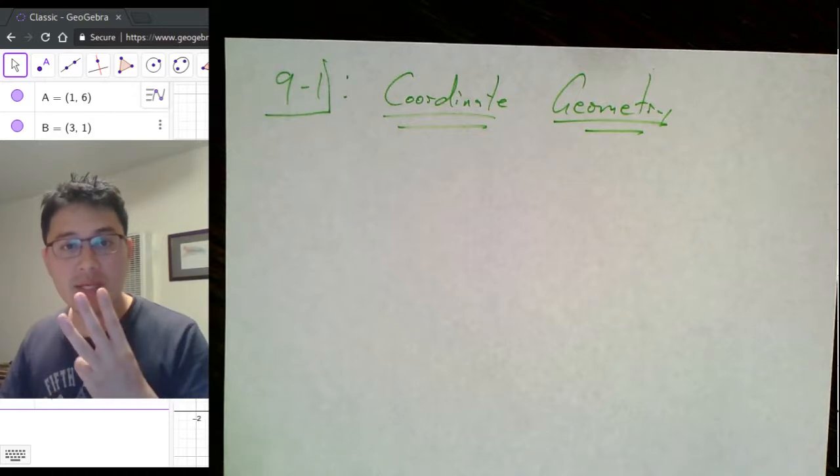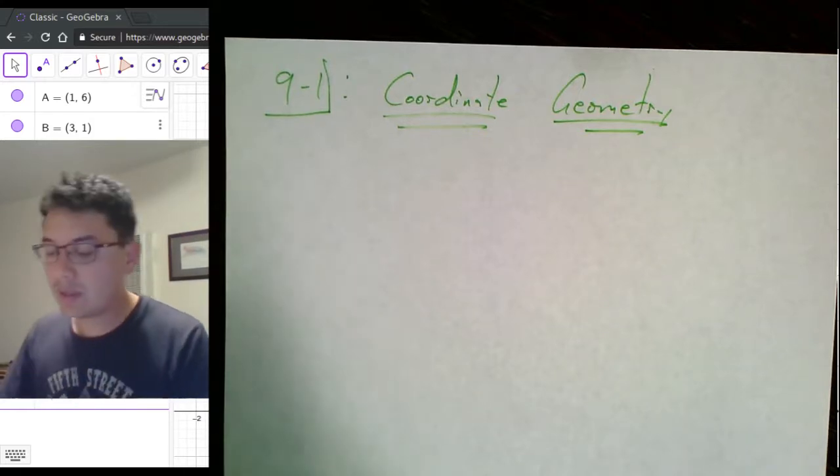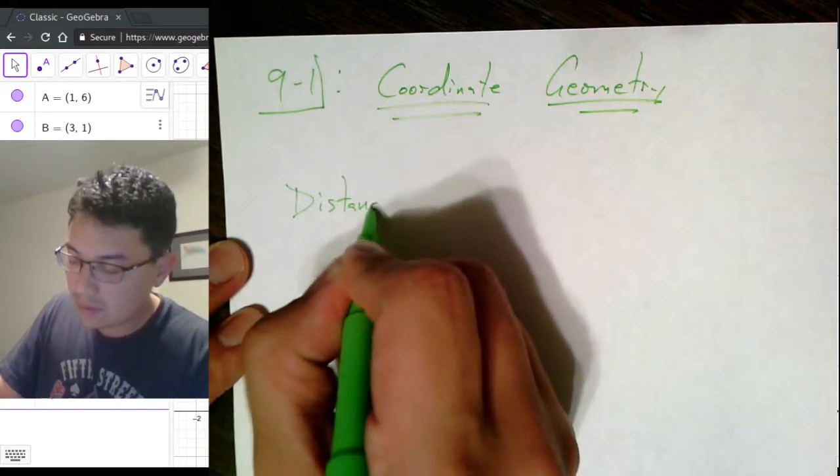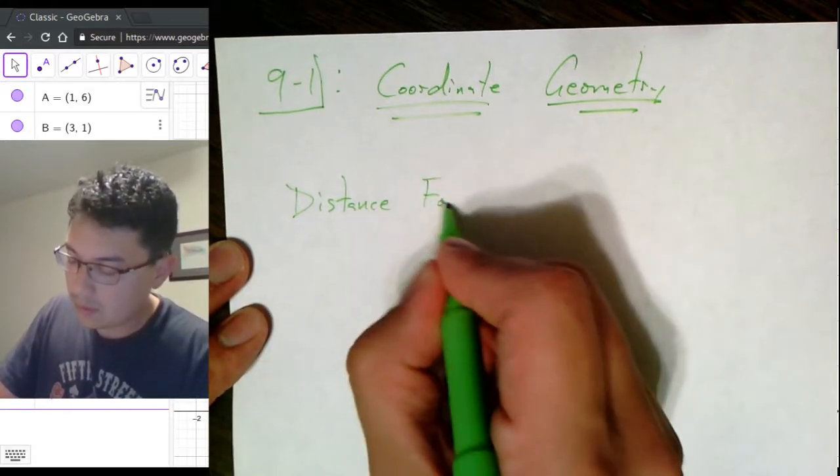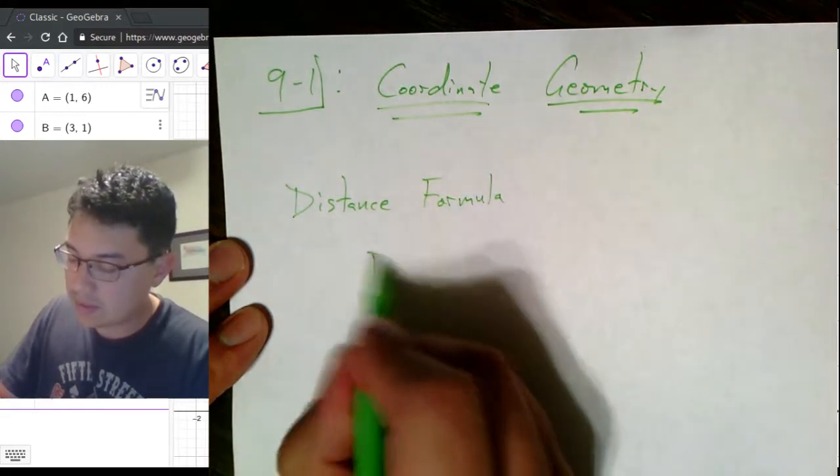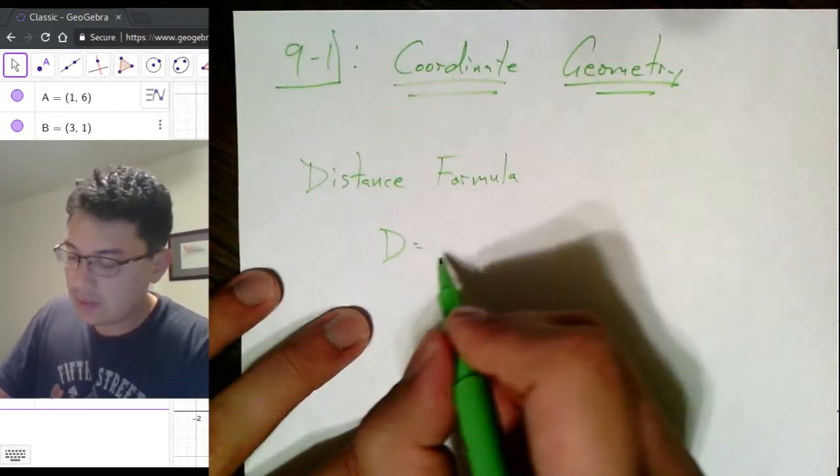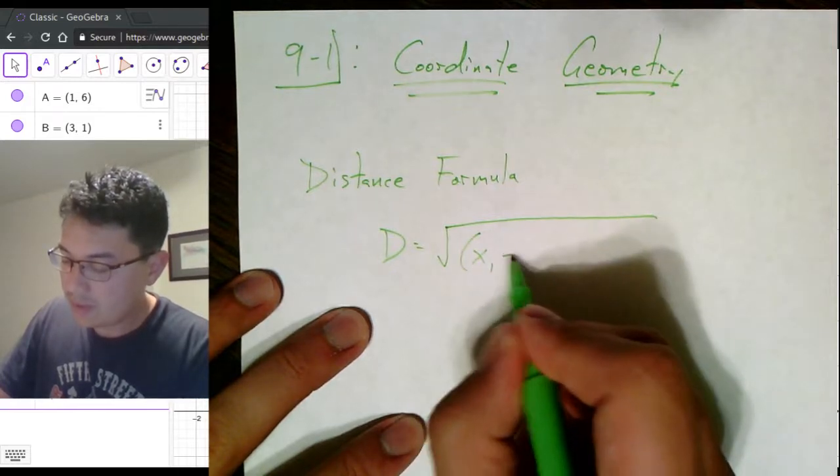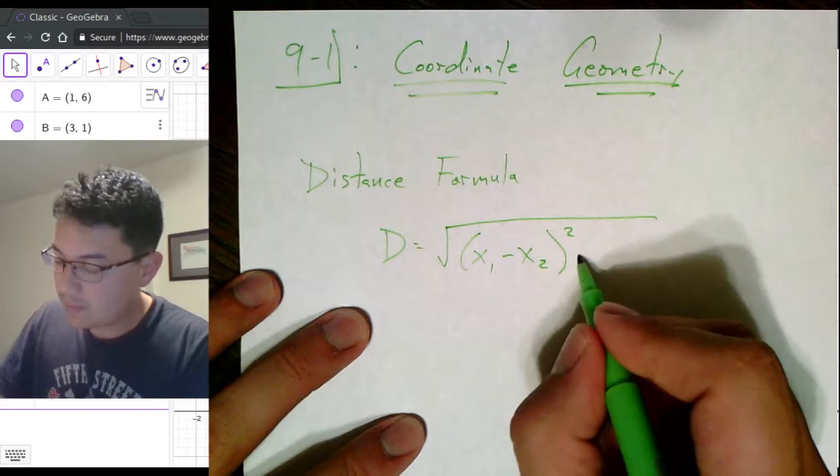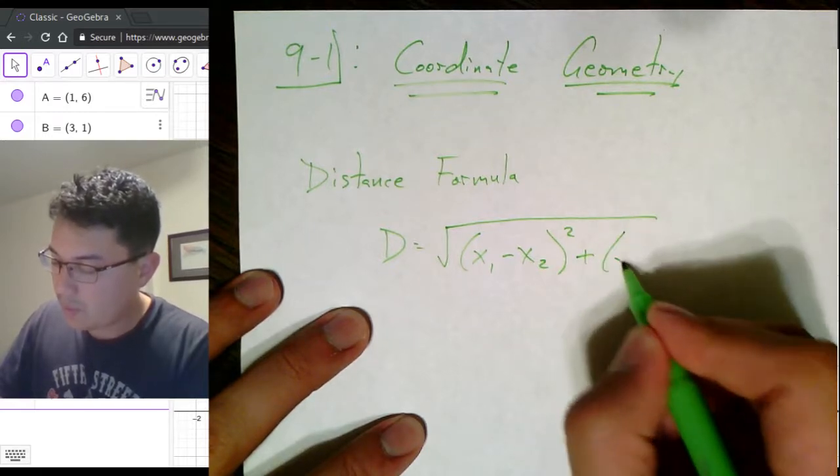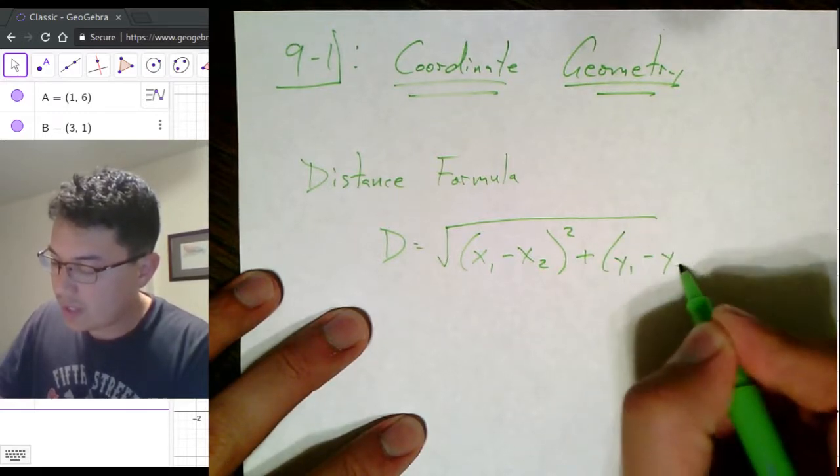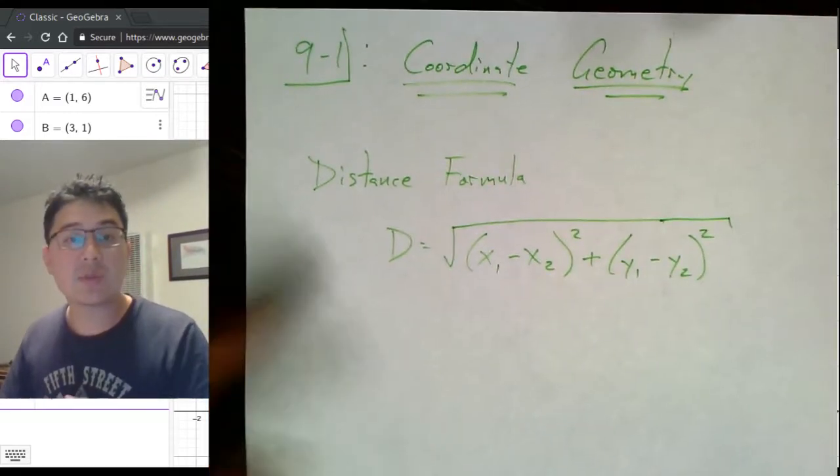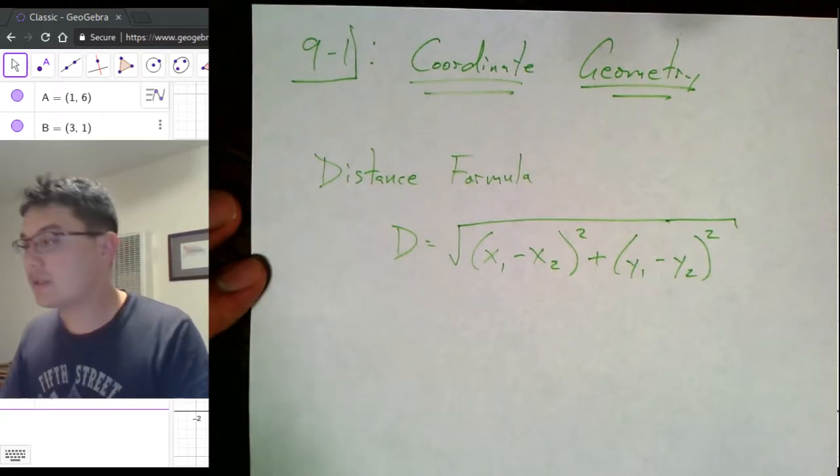We need to review three of the formulas that we had from earlier in the year. The first one is the distance formula. The distance formula is distance equals the square root of x1 minus x2 quantity squared plus y1 minus y2 quantity squared. We use that to find the distance between two points in the rectangular coordinate system.